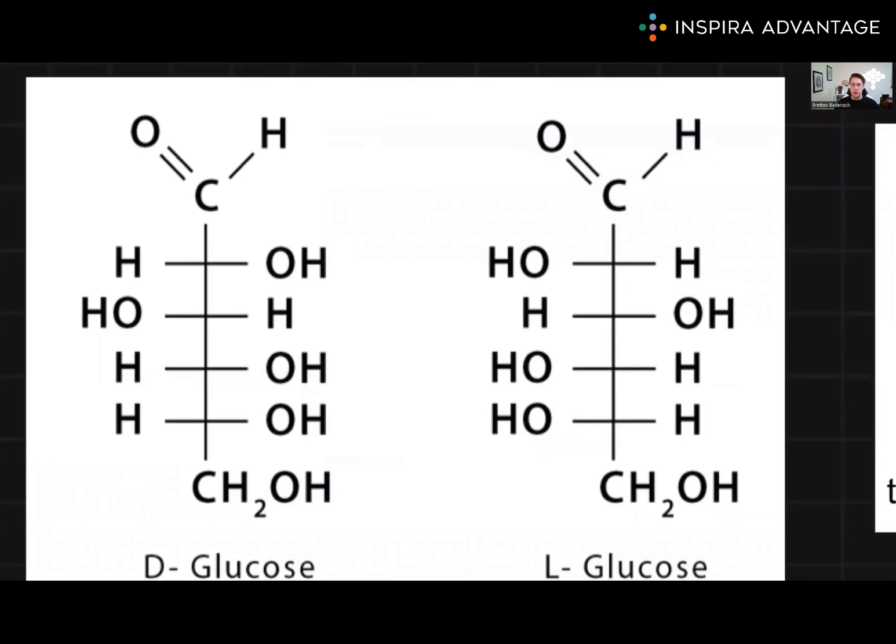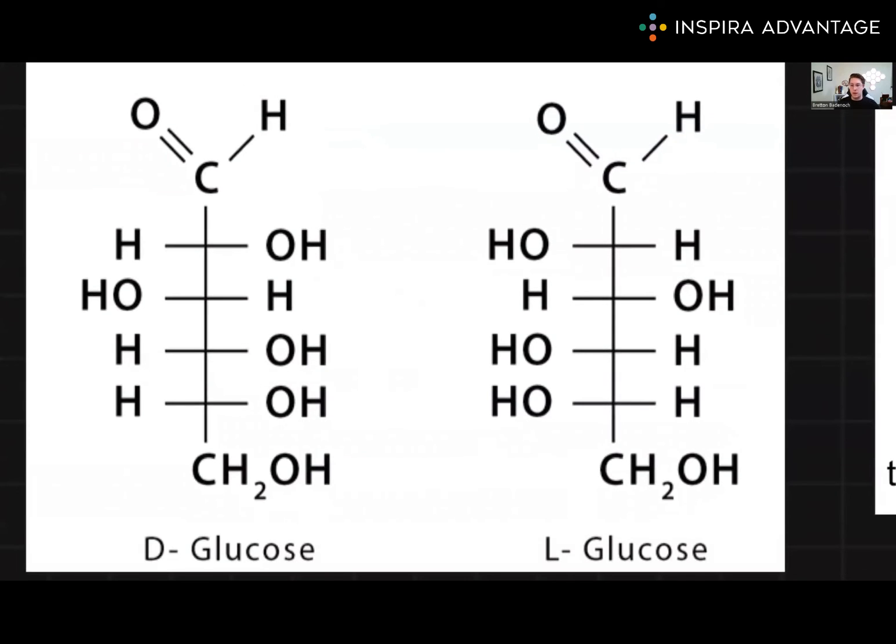It's also critical to understand Fisher projections and E/Z nomenclature as ways to represent stereochemistry. Fisher projections are a convenient way to depict the 3D spatial arrangement of atoms in molecules, typically used for carbohydrates and amino acids. In Fisher projections, the horizontal lines represent bonds that project out of the plane towards the viewer, while vertical lines represent bonds that extend away from the viewer into the plane—wedges and dashes respectively. This allows for easy visualization of the relative configuration of substituents around a chiral center, with the most oxidized carbons placed at the top.